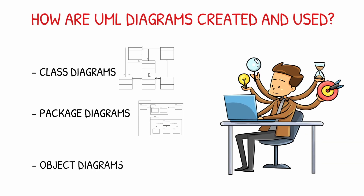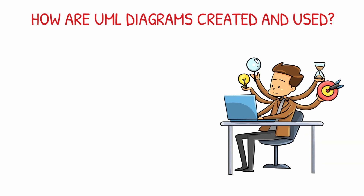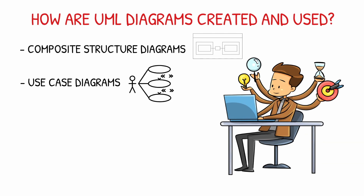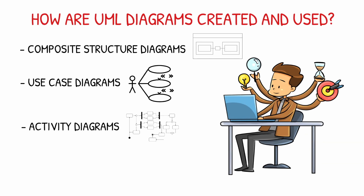Object diagrams describe the static structure of a system at a particular time. They can be used to test class diagrams for accuracy. Composite structure diagrams show the internal part of a class. Use case diagrams model the functionality of a system using actors and use cases. Activity diagrams illustrate the dynamic nature of a system by modeling the flow of control from activity to activity. Typically, activity diagrams are used to model workflow or business processes and internal operations.